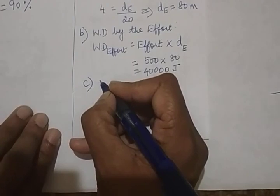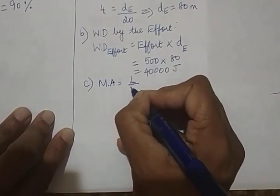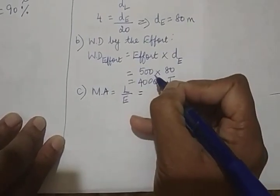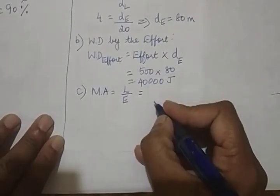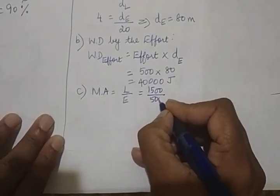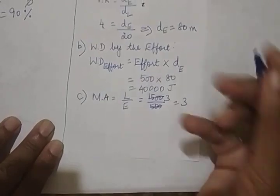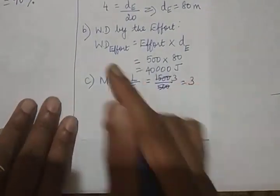Coming to the C part. Mechanical advantage. That will be load upon effort. That will be load is 1500, effort is 500. So MA will be 3. See your velocity ratio is 4 but MA is only 3.